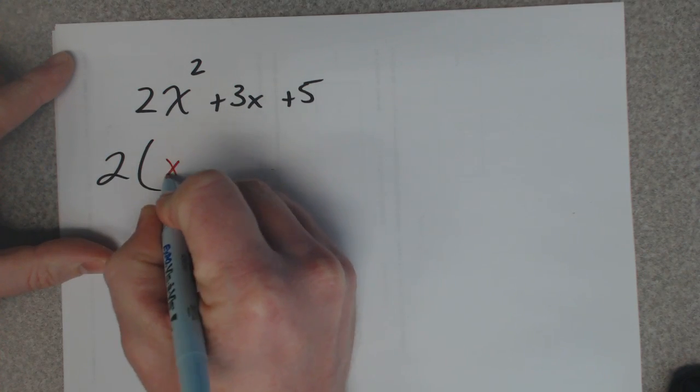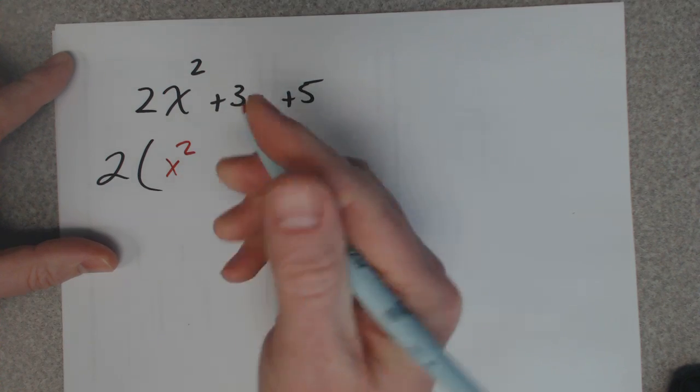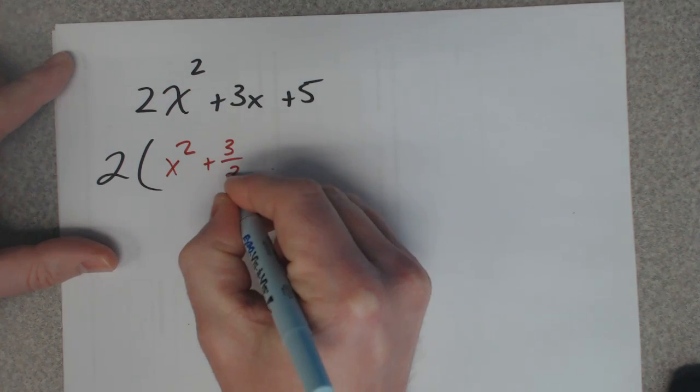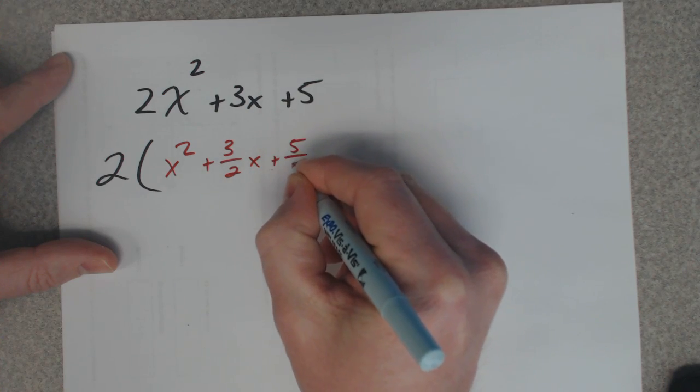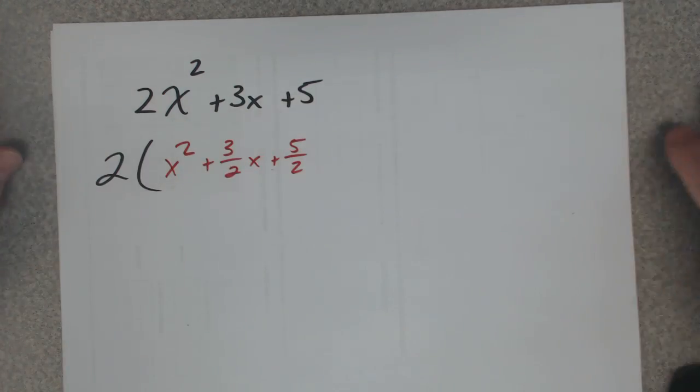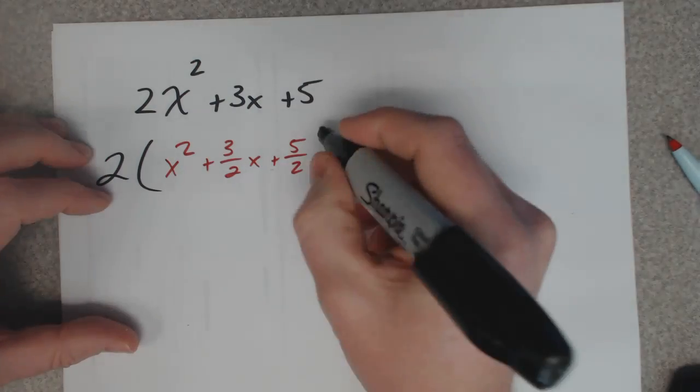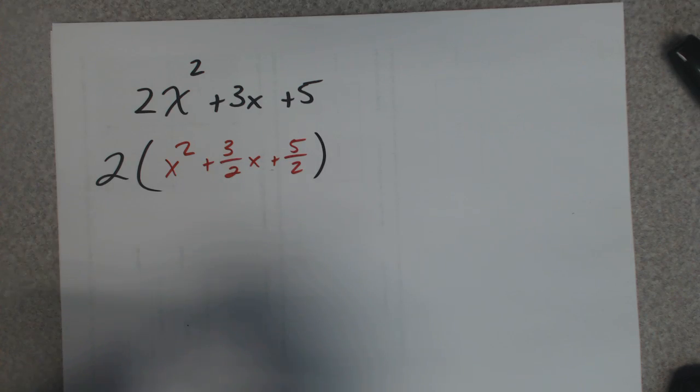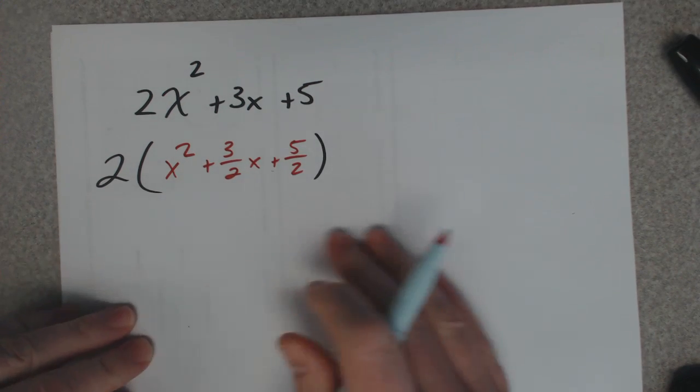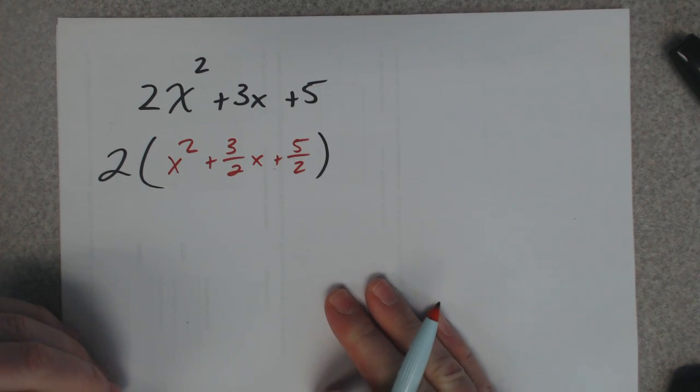So you're going to have x squared, 3 divided by 2 is 3 halves, and then 5 divided by 2 is 5 halves. I'm leaving this in fractions because sometimes, like if you're dealing with thirds or sevenths or something that's repeating, you can't convert it to decimal. So we're going to leave it in fractions so it works every time.